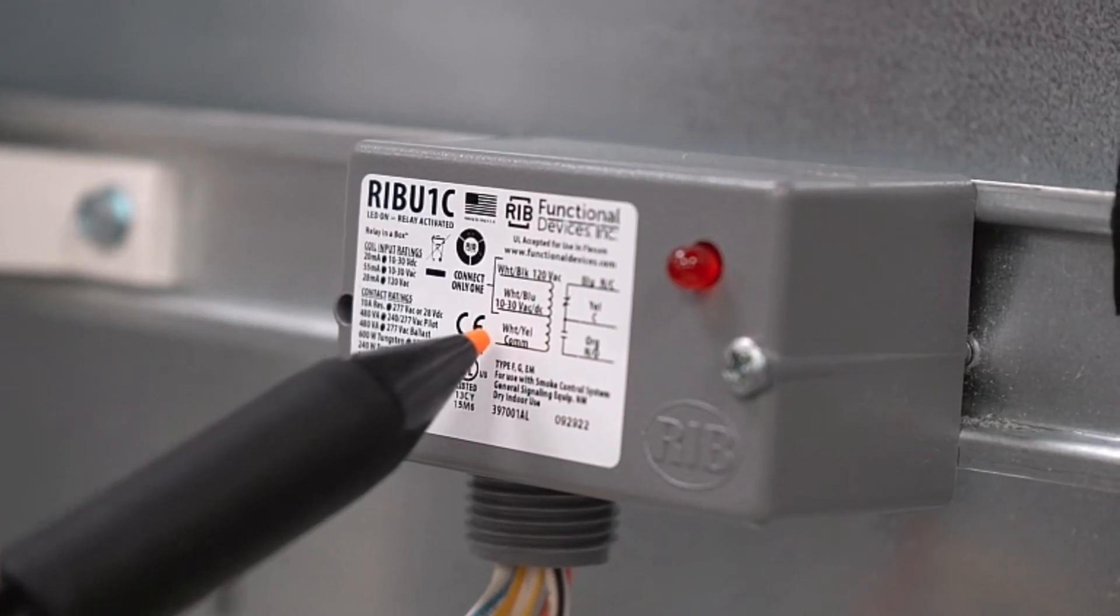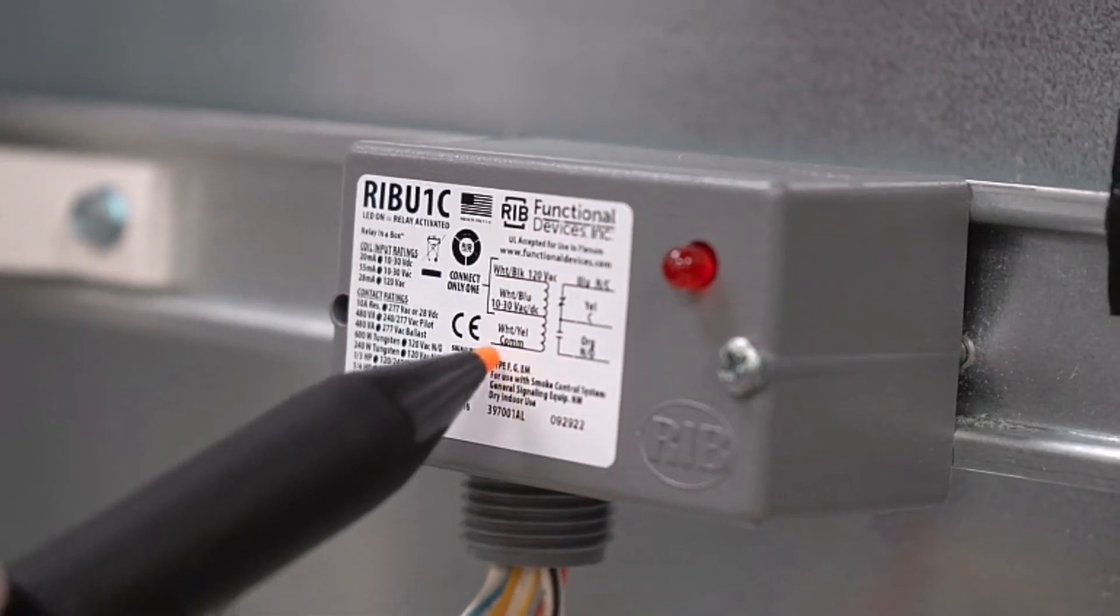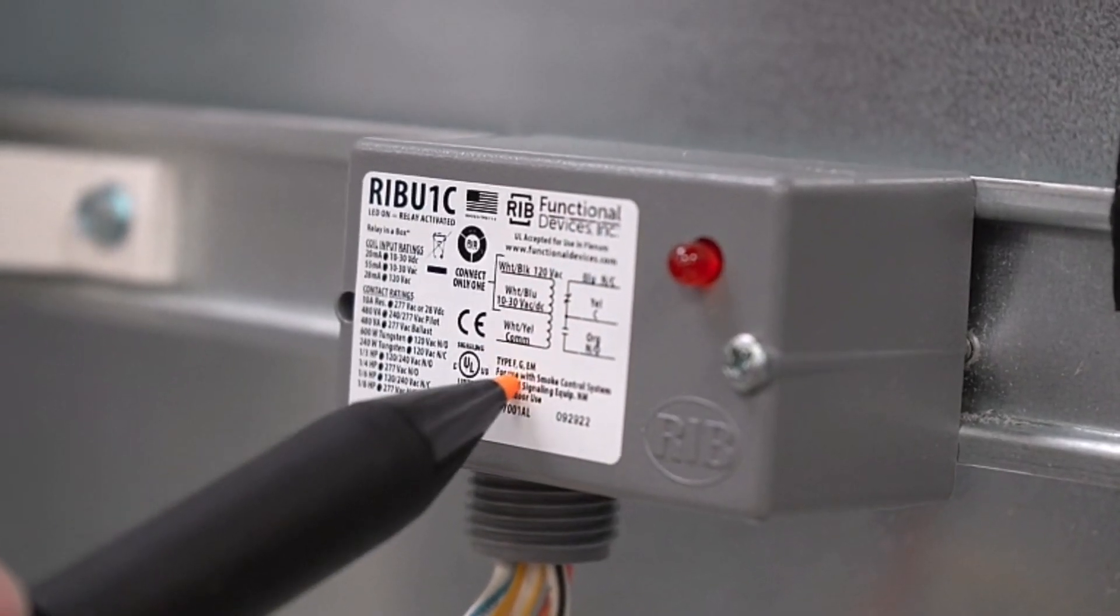So for our scenario here with the UC600, we're going to use 10 to 30 volts DC, so white and blue wire. Then we also have to complete our path for our white and yellow for our common.